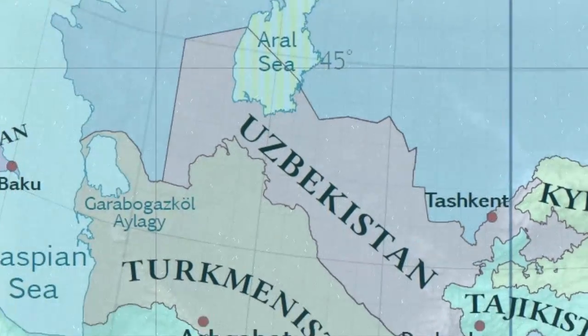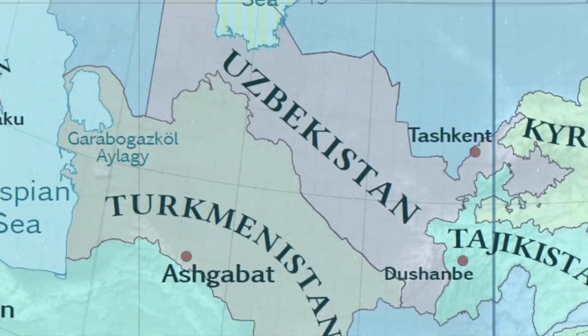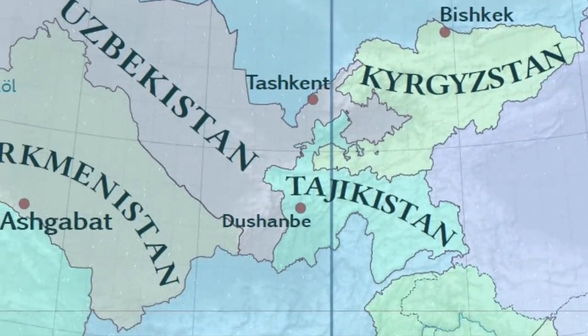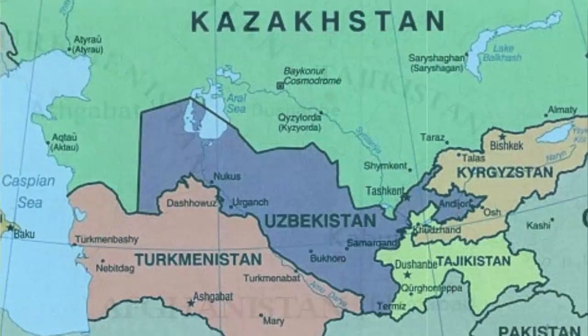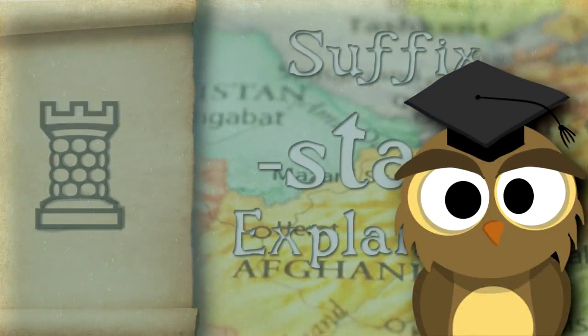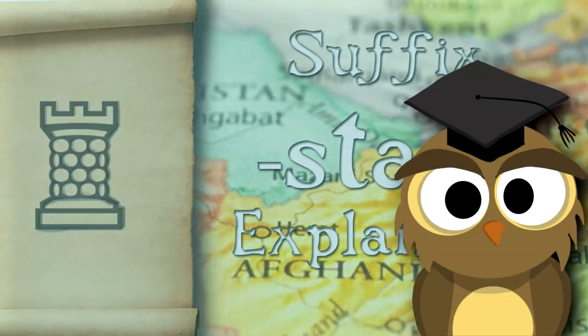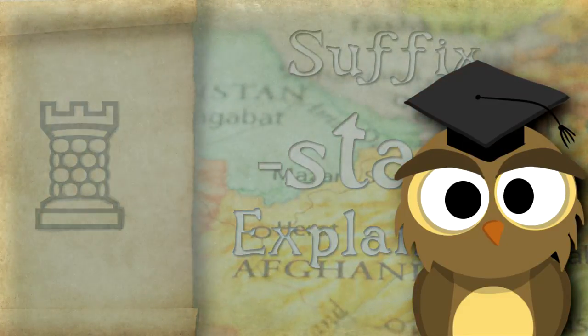There are seven nations in the world known as the Stans, found between Russia and the Indian Ocean. In this first part, we're going to look at the flags of Afghanistan, Pakistan, and Turkmenistan. If you want to know what the suffix 'Stan' means, please check out this video. And of course, because this is Arabic, you're going to have to forgive my pronunciation.